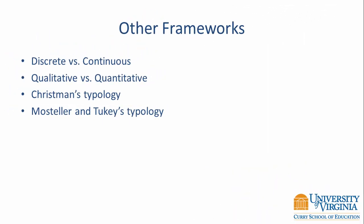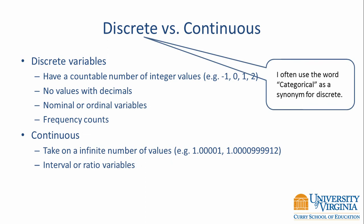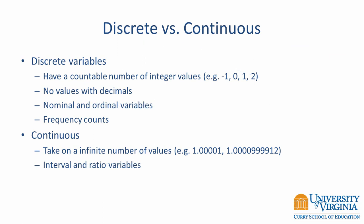Stevens' framework is very useful, but people have created other typologies. The discrete versus continuous distinction is easy to apply, and it corresponds with the distinction between discrete and continuous probability distributions. Discrete variables have a countable number of integer values — there are no values with decimals. Examples include nominal and ordinal variables and frequency counts. Continuous variables, on the other hand, take on an infinite number of values; for example, there are an infinite number of values between one and two. Interval and ratio variables are examples of continuous variables.